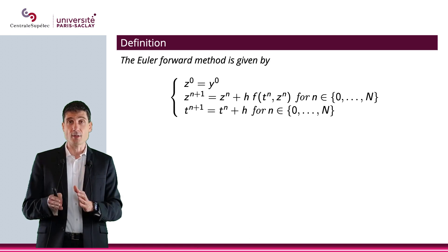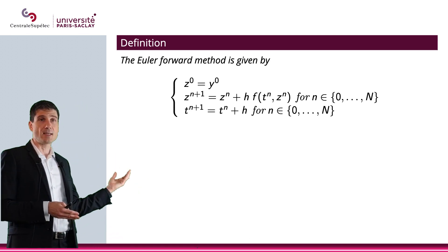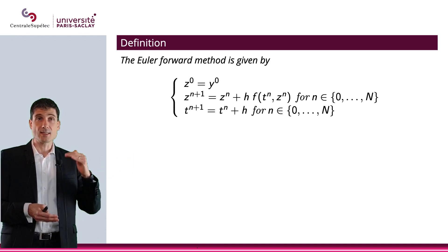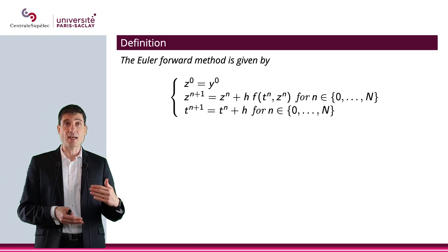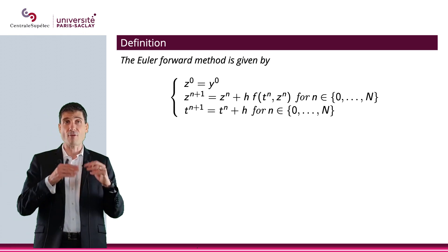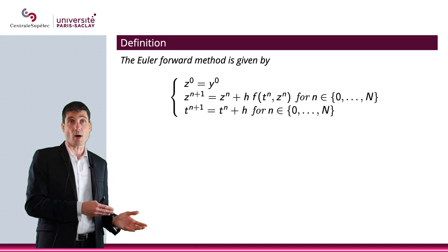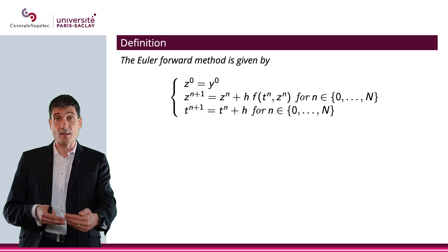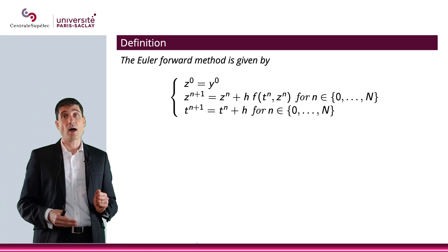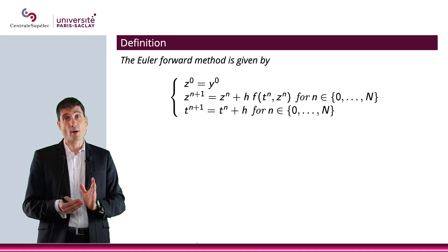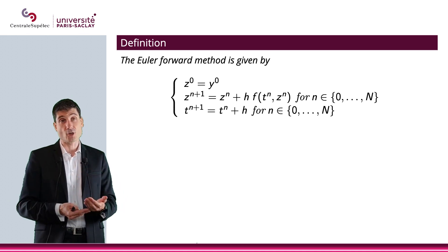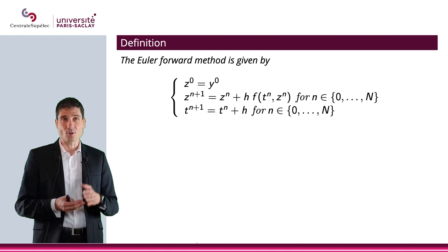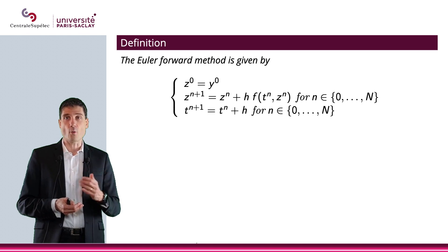So let's actually give this Euler method some formal definition here. So we will call the Euler-forward method that sequence. We start with Z0 equals Y0. And then what we will do is Zn plus 1 is Zn plus h F of Tn, Zn. And Tn plus 1 is simply Tn plus H. So H is a step. I'm basically moving forward, moving to the right a little bit. And basically the question is, what will be the approximation of my value, of my function Y, when I do this? So that is the Euler-forward method.